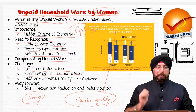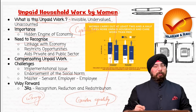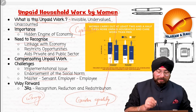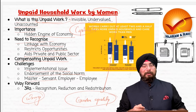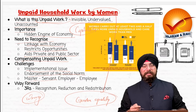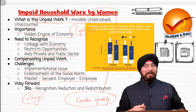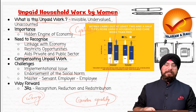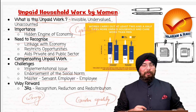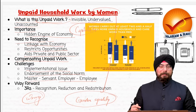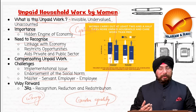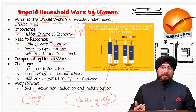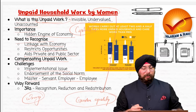After that, we can talk about compensation of unpaid work by any gender. But compensation also has various challenges: first, the implementational issue — who will compensate them? Government would not be able to compensate everyone doing household work. Then endorsing the social norm — compensating only women would reaffirm the social wrong that has been ongoing for years. Then a master-servant relation gets created — if you get compensation for something, the person compensating you becomes your master or employer. The household work would not be a duty anymore; it would become a job. So that is also a challenge in compensation of unpaid work.